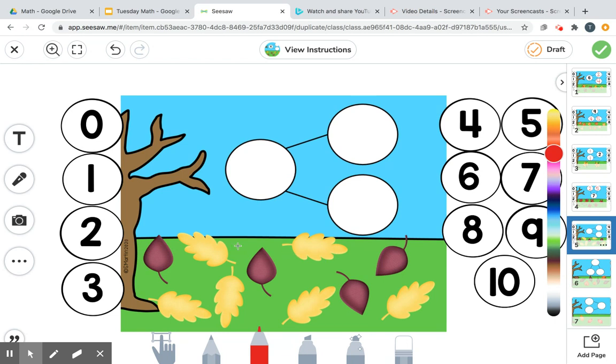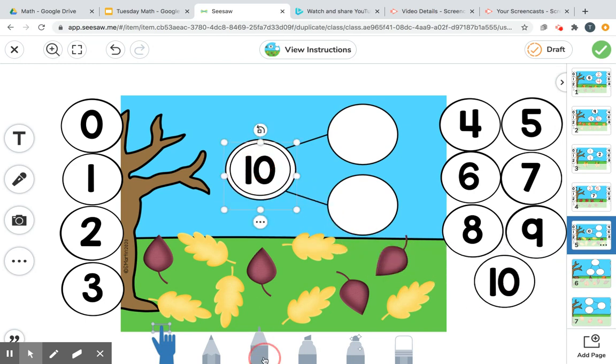Now we're going to get a little bit harder. Let's see how many I have all together right here. One, two, three, four, five, six, seven, eight, nine, ten. I have ten all together. That's my whole. I'm going to stick him right here. That's how many I have all together. I have ten all together.